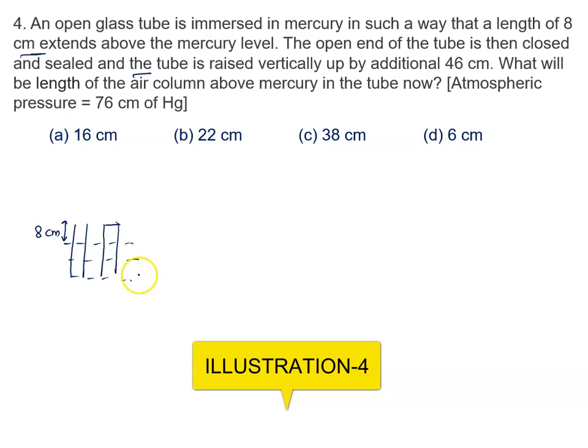And the tube is raised vertically up by an additional distance 46 cm. This is the additional distance. Total movement is 46 plus 8, that is 54. So we move the tube additional 54 and it is closed. Sorry, additional 46. 46 plus 8 is 54 cm from the mercury level.